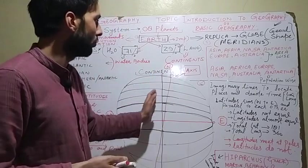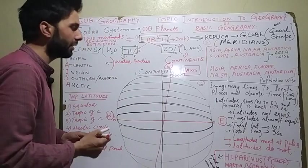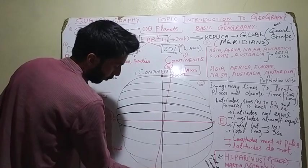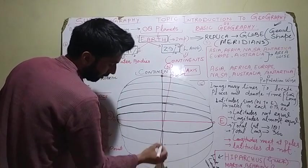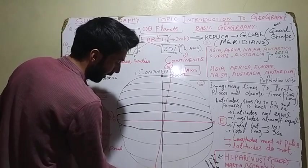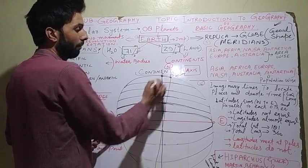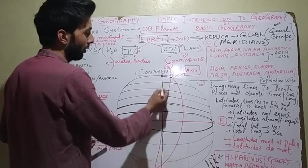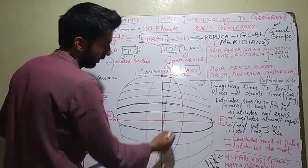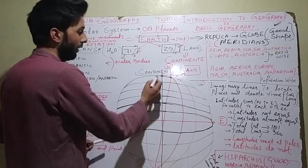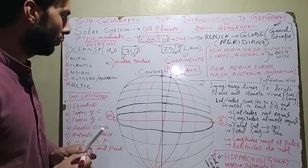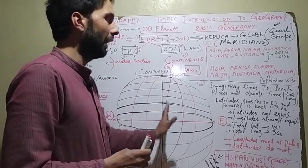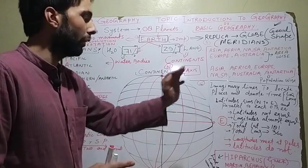If we talk about longitudes, they intersect each other at the poles — at the North Pole and South Pole. So remember: longitudes meet at poles, while latitudes do not meet each other. Latitudes run parallel and do not meet.